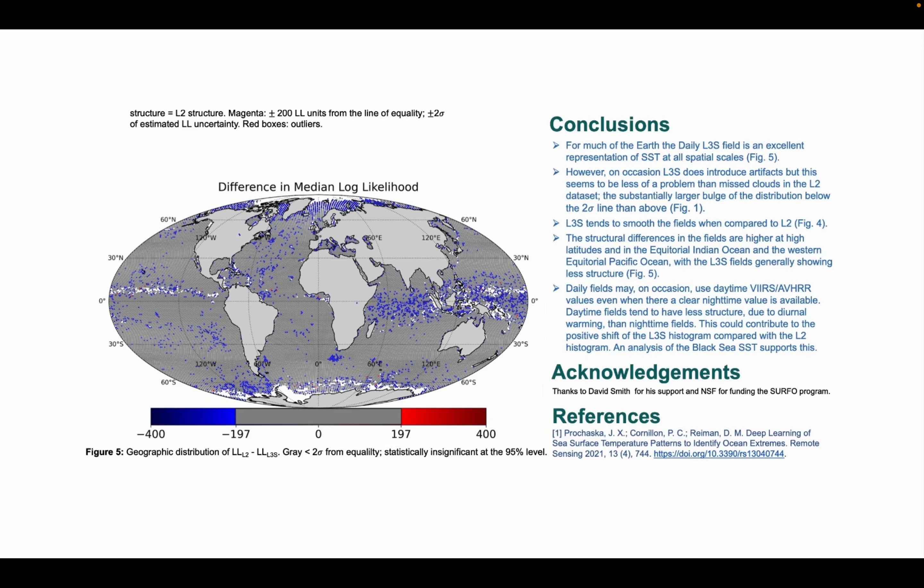The creation of the daily fields may also result from daytime VIRS AVHRR values even when there is a clear nighttime field available, as we've seen in analysis from the Black Sea. This could also contribute to the positive shift of the L3S histogram as compared to the L2 VIRS histogram.